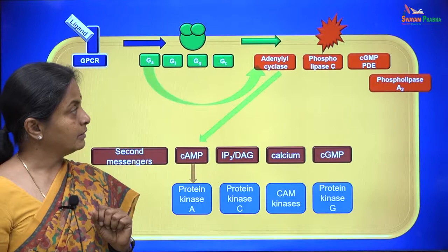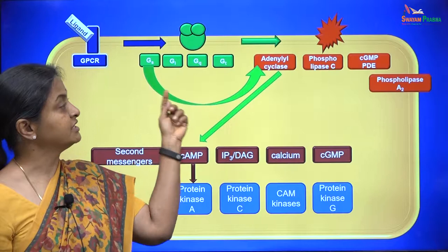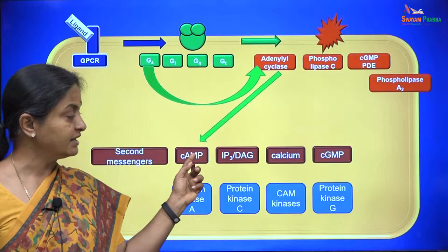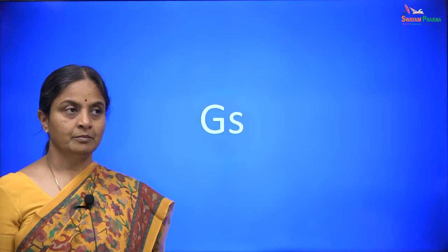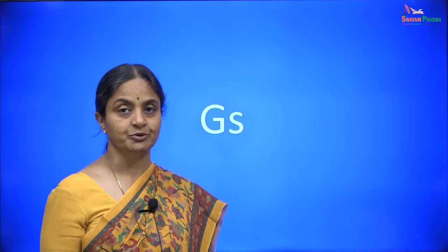The first of them, Gs or G-stimulatory, stimulates the membrane enzyme adenylyl cyclase which increases cyclic AMP levels within the cell and that ultimately activates protein kinase A. This is the scheme we will discuss first. Before seeing the pathway involving the Gs type of G-protein, let us consider what G-proteins are.